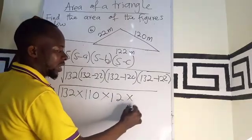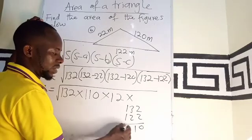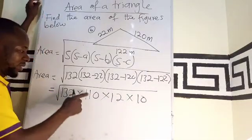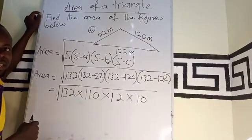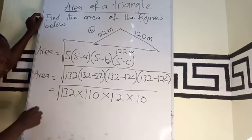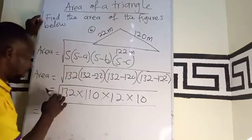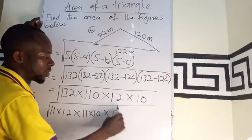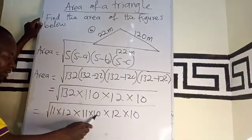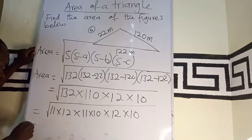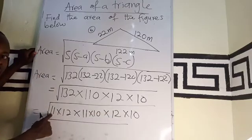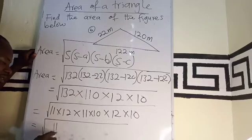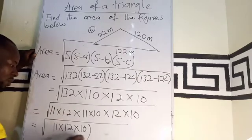And 132 minus 122 gives us 10. So from this, we have 132 times 110 times 12 times 10. We can see that 132 is also 11 times 12, and 110 is 11 times 10. So I can rewrite this as the square root of 11 times 12 times 11 times 10 times 12 times 10. This is going to be 11 times 12 times 10 all squared.